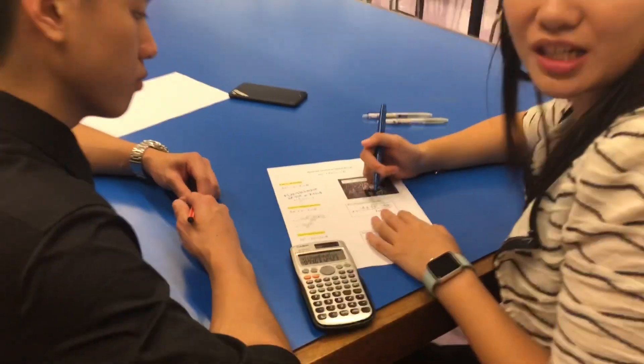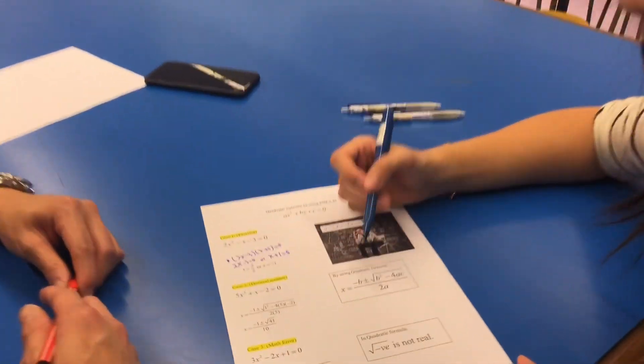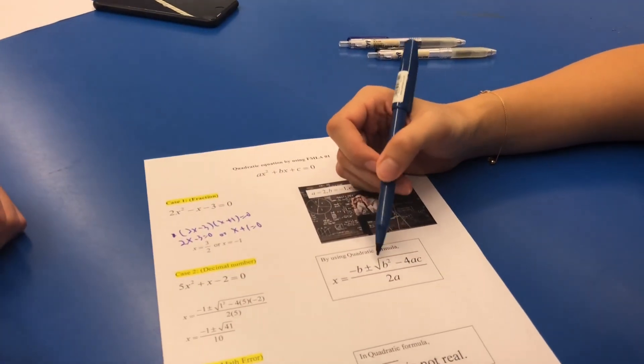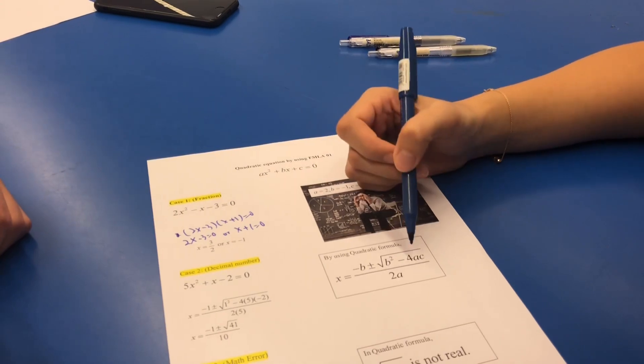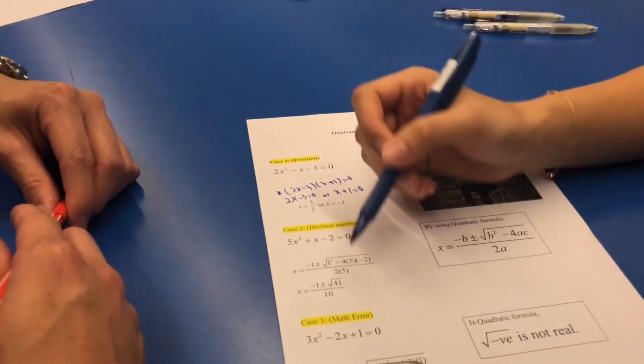You need to memorize: x equals negative b plus or minus the square root of b squared minus 4AC, all over 2a. Then you input all those A, B, and C values, and you can get the final answer.